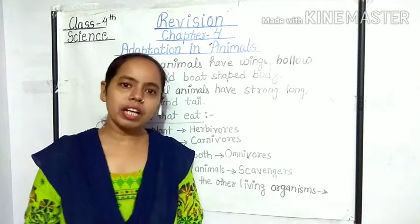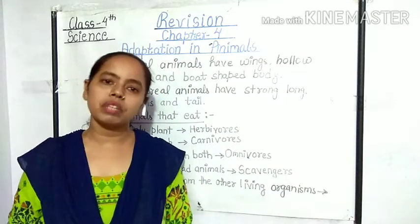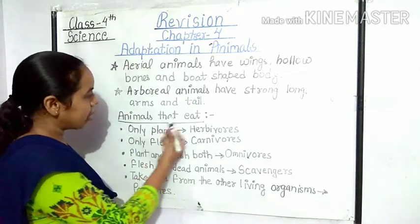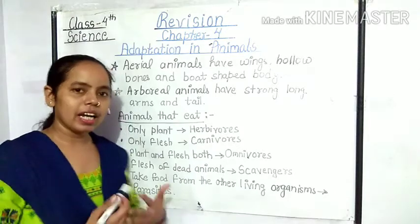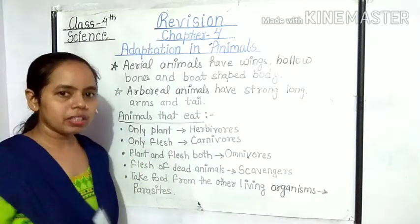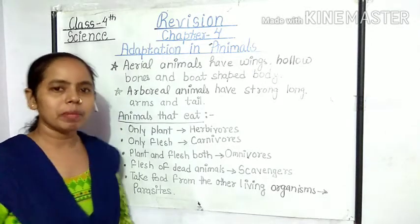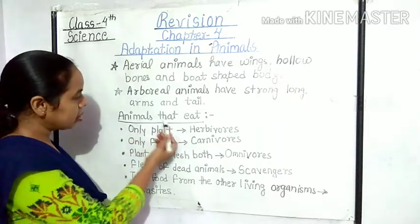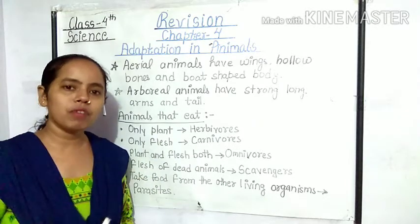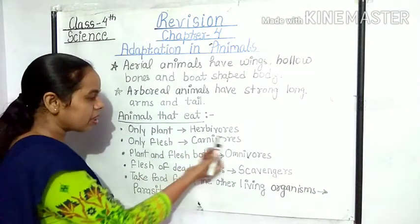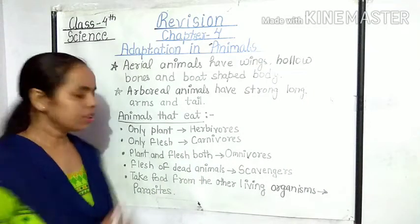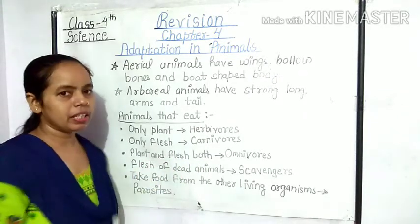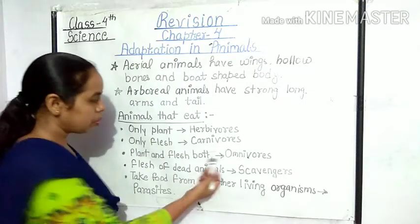Now let's classify the animals according to their food habits. Animals that eat only plants are called herbivores — ऐसे जानवर जो केवल plants खाते हैं, हरी सब्जियां, घास, पत्तियां खाते हैं उन्हें herbivores बोलते हैं। Animals that eat only flesh are called carnivores — ऐसे animals जो केवल flesh या मांस खाते हैं उन्हें carnivores बोलते हैं। Animals that eat both plants and flesh are known as omnivores।